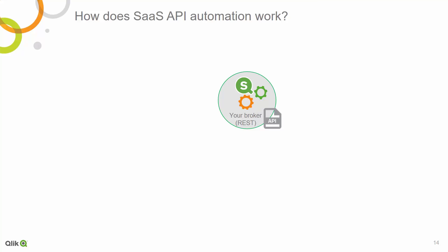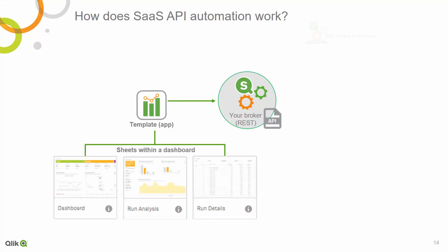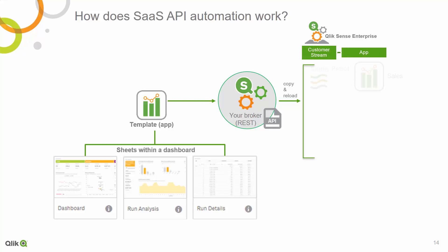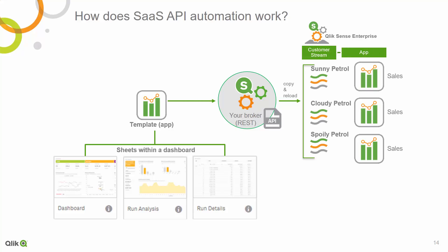Let's consider the goals of embedding Qlik Sense in a multi-tenant SaaS environment. Ultimately, you want to provide a unique dashboard to each of your end customers. You might also want to enable your customers to extend their own dashboards with their own sheets and charts. But you don't want to maintain these separate dashboards. In the next few slides, we will explain how you can use our APIs to make a copy of the template app for each of your customers and load it with customer-specific data.